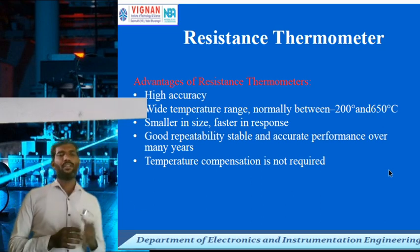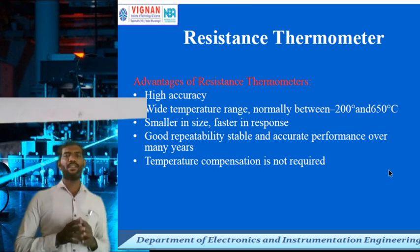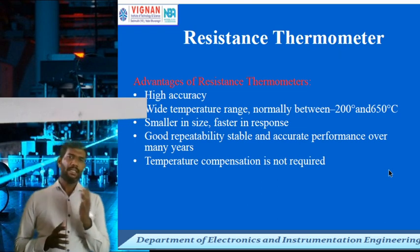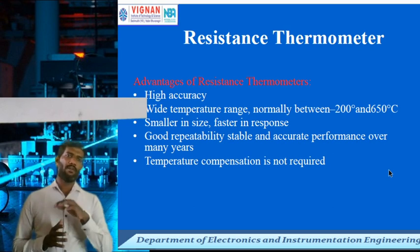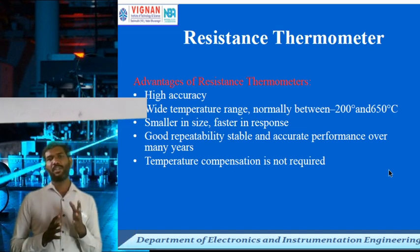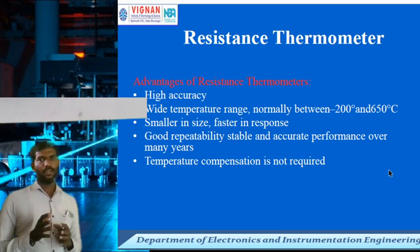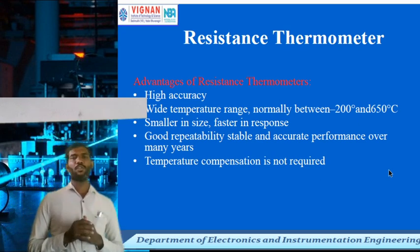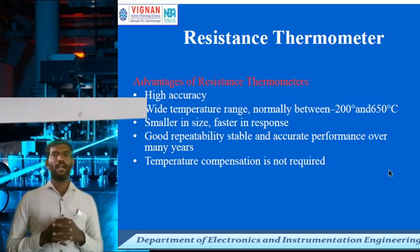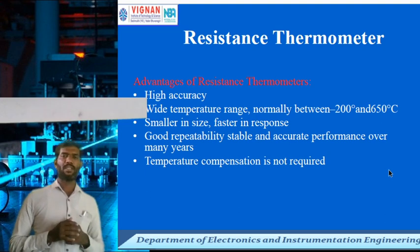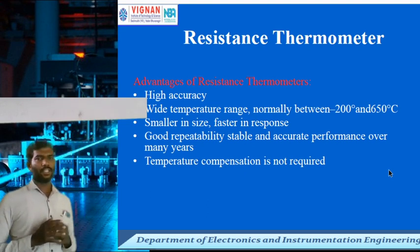Now let us see the advantages and disadvantages of thermocouple, thermistor, and RTD. We are going to prefer another type of instrument used in blast furnace temperature measurement — the pyrometer. Among all temperature measuring instruments, RTD is also one of the important instruments, having different advantages: high accuracy, used in a wide range of temperatures from minus 200 to 650 degrees centigrade, small in size, fast response, and good repeatability.